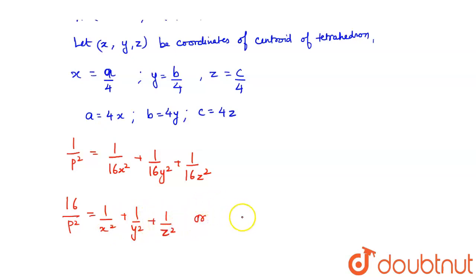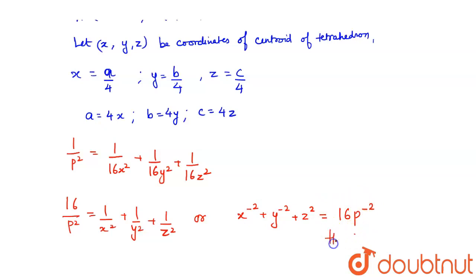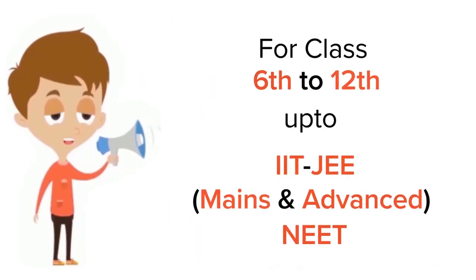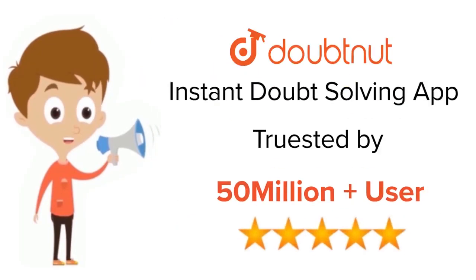This can also be written as x to the power minus 2 plus y to the power minus 2 plus z to the power minus 2 equals 16 p to the power minus 2. Hence proved. I hope you understood the explanation. Thank you. For class 6 to 12, IIT JEE, and NEET level, trusted by more than 5 crore students — download DoubtNet today.